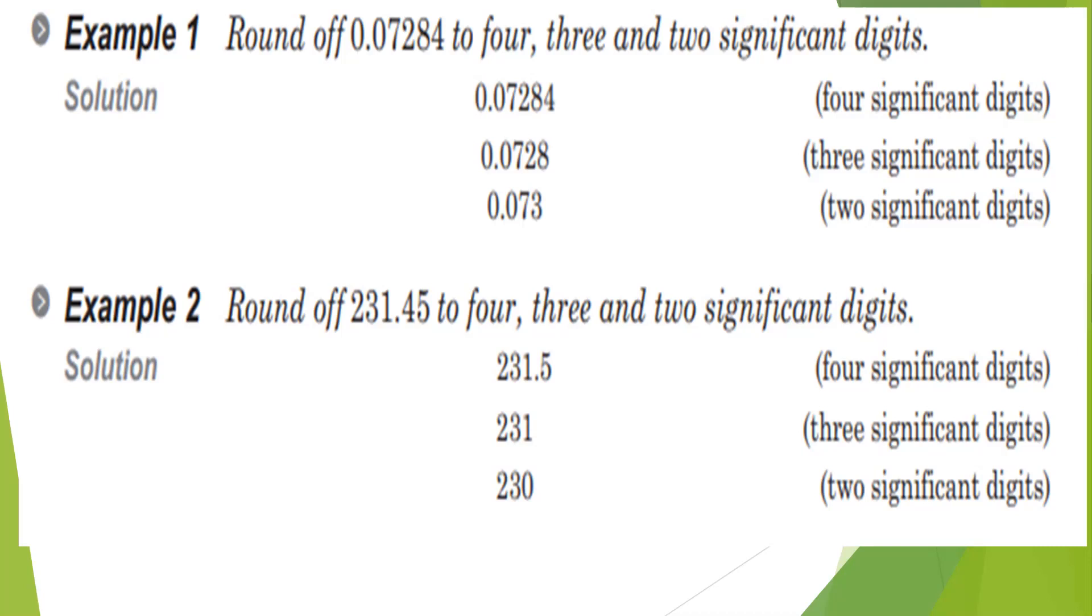Now see how many significant figures are in this number 0.07284. The digits 7, 2, 8, 4 are significant, and the leading zeros are not significant. So totally there are 4 significant figures. As they asked, the first question is 4. No need to change the number.